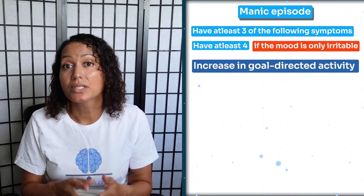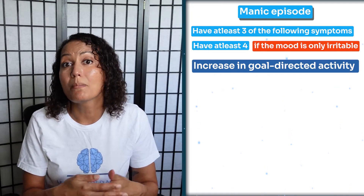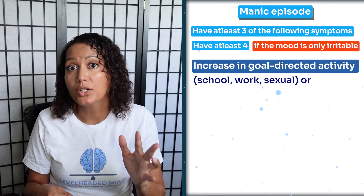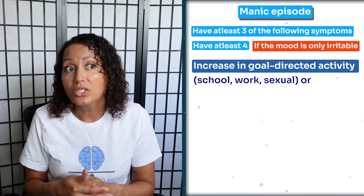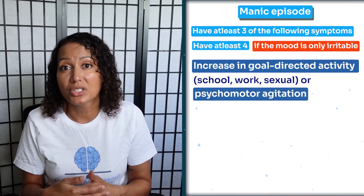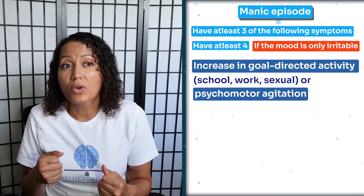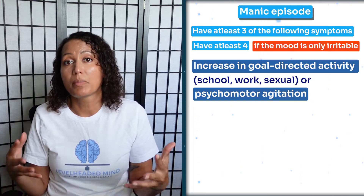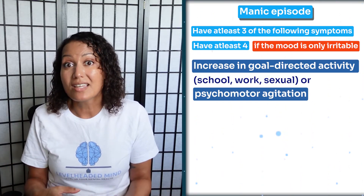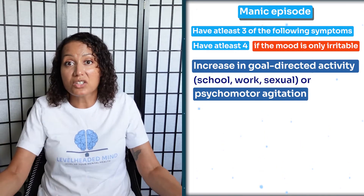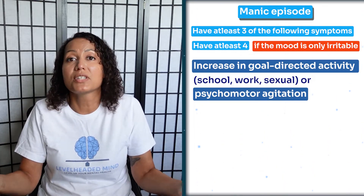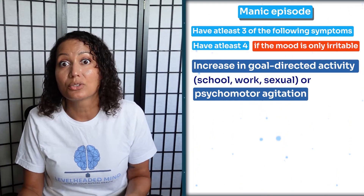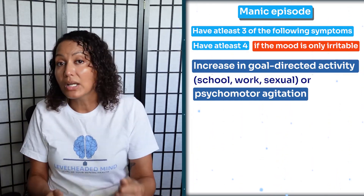The next symptom is an increase in goal-directed activity, which is one of the primary factors required for a manic episode. They could also have psychomotor agitation — they're so restless they have to keep going and going. Patients with bipolar in a manic episode often say it feels like electricity is running through them; they can't stop. They're like the Energizer Bunny — they keep going and going.